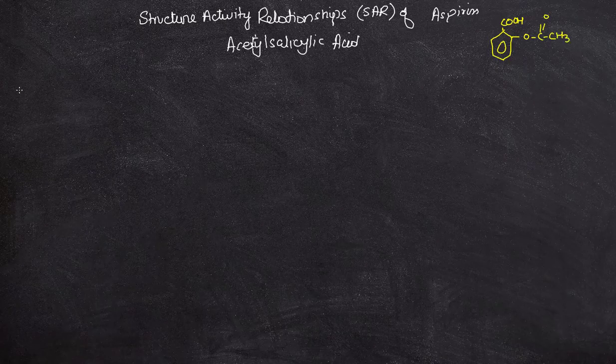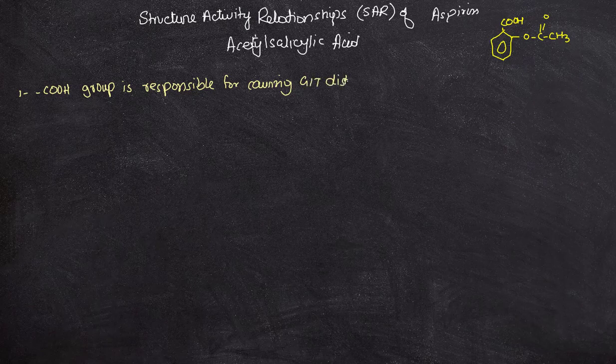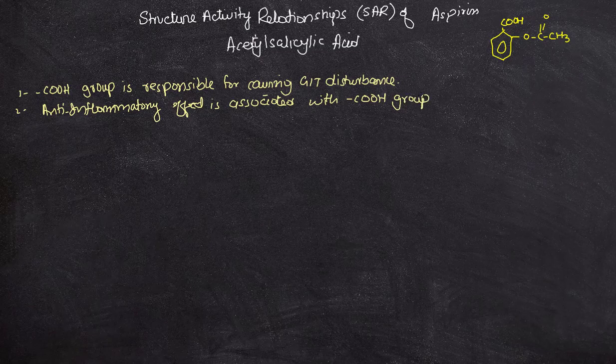The carboxylic group, COOH, is responsible for causing GIT disturbance. Along with the GIT disturbance, the anti-inflammatory effect of acetylsalicylic acid is also associated with the carboxylic group.